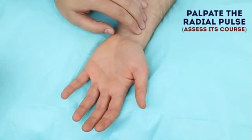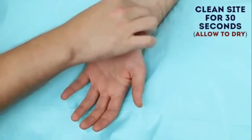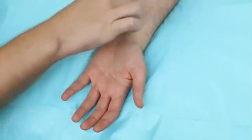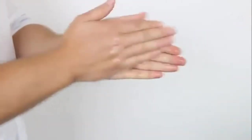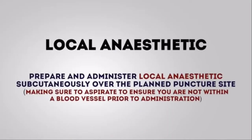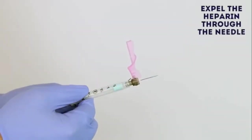Now first we have to palpate the radial pulse and assess it. Then we clean the site for 30 seconds and allow it to dry with alcohol. Then we don the apron, wash our hands, and don the gloves. The ABG syringe usually comes with preloaded heparin — we have to expel the excess heparin before use.